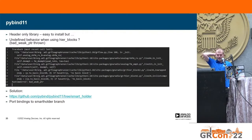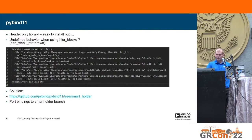PyBind11 is not technically a Python package but rather a C++ library that creates Python bindings. The installation went pretty smoothly. However, in practice I got some weird undefined behavior, especially when using hierarchical blocks. The solution was to use a different branch of PyBind11 called the smart holder branch, which modifies some aspects of smart pointer lifecycle in PyBind. The problem is that this branch uses a different syntax for binding generation, so I needed to port GNU Radio and all the out-of-tree modules I used to the new syntax. But eventually things worked out.